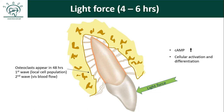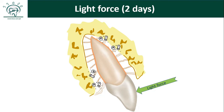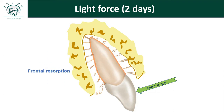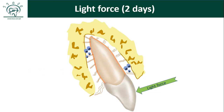These activated osteoclasts will first start resorption of the lamina dura. Since they are eating the bone from the inside out, we call it frontal resorption. According to William Proffit, if you have applied light force, there will be movement of the tooth within two days, with a frontal resorption pattern. Simultaneously, osteoblasts will also appear and start forming bone, and in this way bone remodeling begins within two days of light force application.